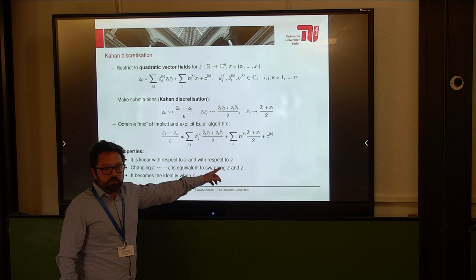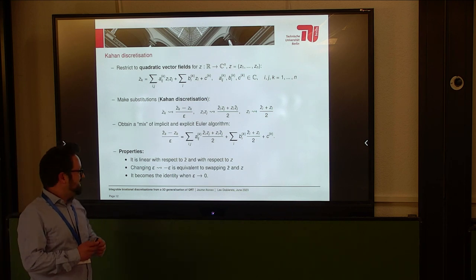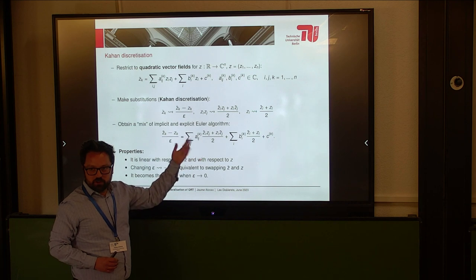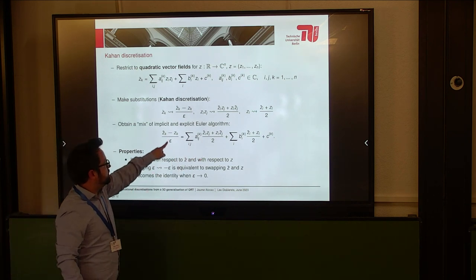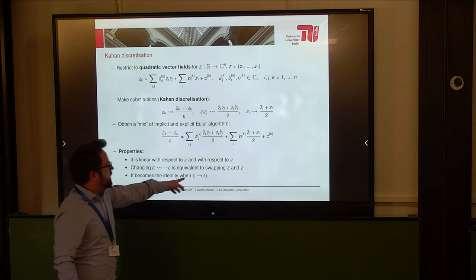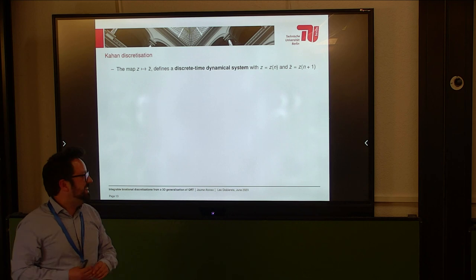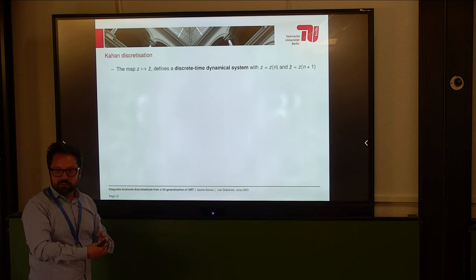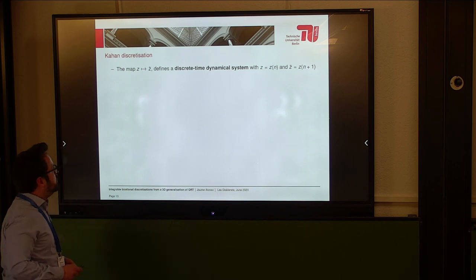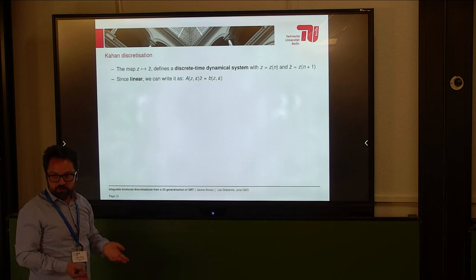This method is linear with respect to Z-tilde and Z. If I consider the Z-tildes as variables and the Z as constants, or the other way around, it's clearly linear. It's also clear that if I change the sign of epsilon, the tildes and non-tildes swap roles. And it becomes an identity when epsilon becomes zero. Because it's linear, I can solve the linear system and define a discrete dynamical system — Z-tilde as a function of Z. I can always do this because, for epsilon small enough, the matrix will always be non-singular, so this always has a solution.